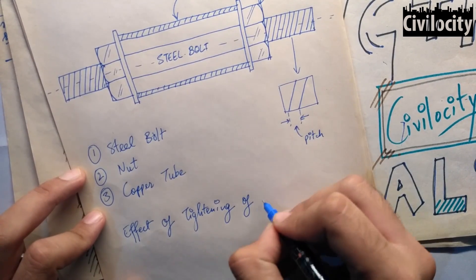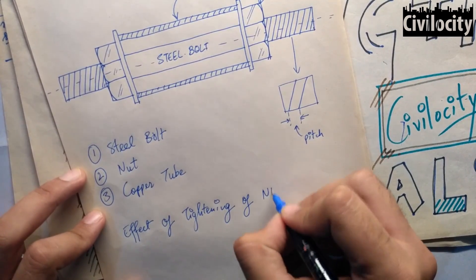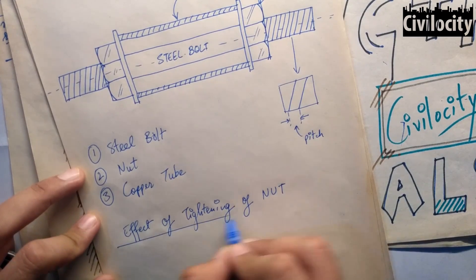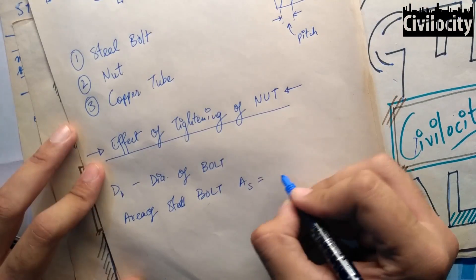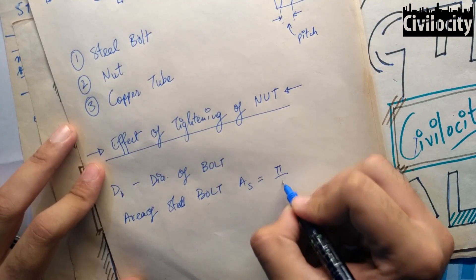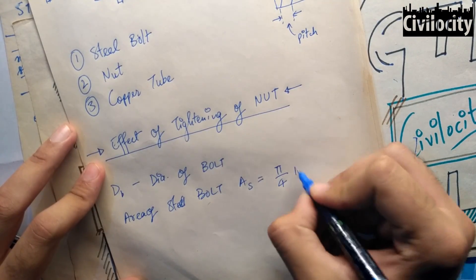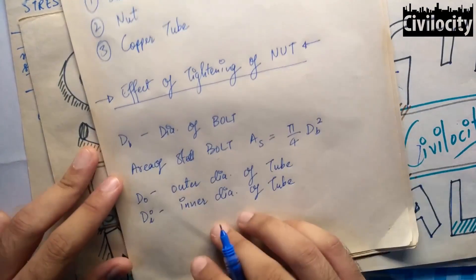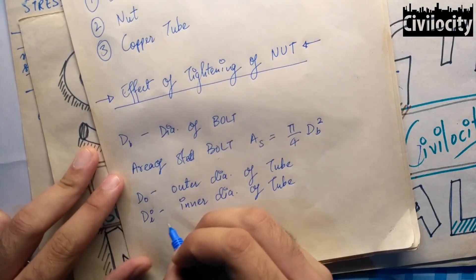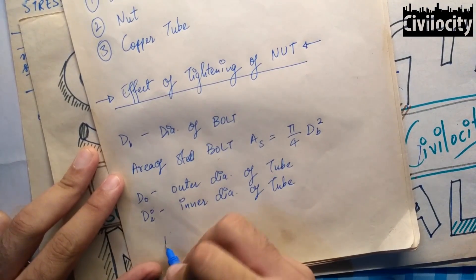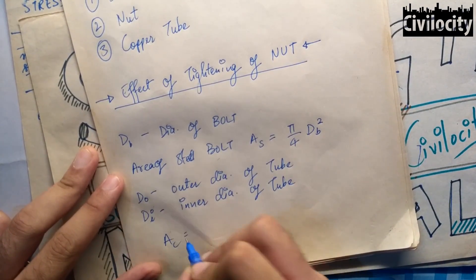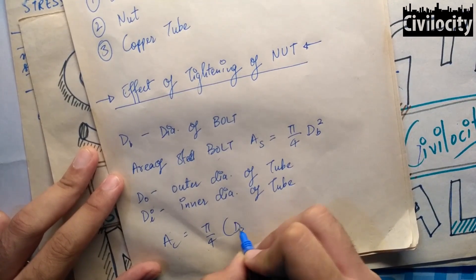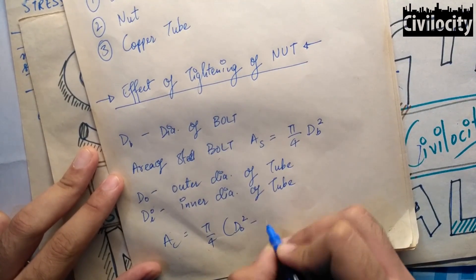Suppose db is the diameter of the bolt. Area of steel bolt is pi by 4 times db squared. Do is the outer diameter of the copper tube. Di is the inner diameter of the copper tube. Area of copper tube is pi by 4 times (d_outer squared minus d_inner squared).